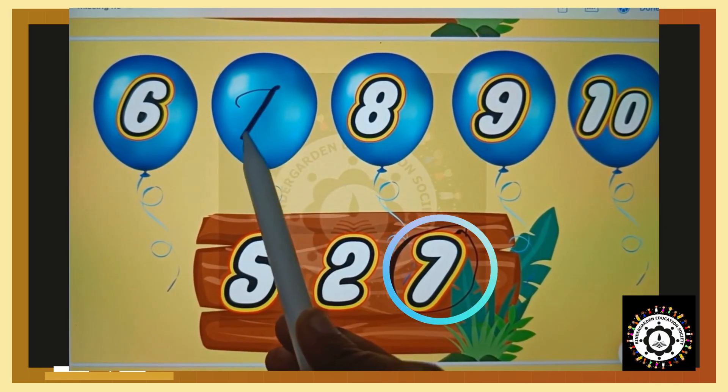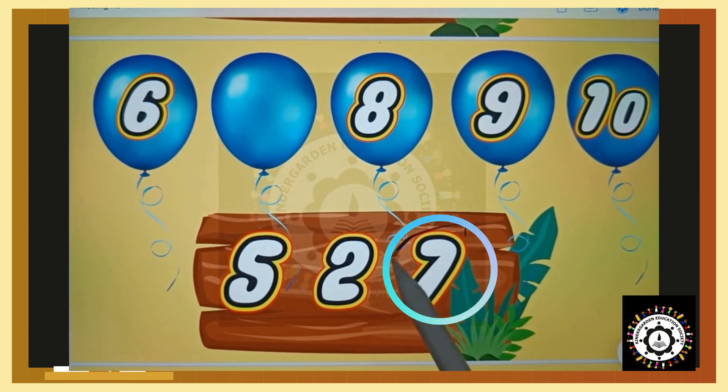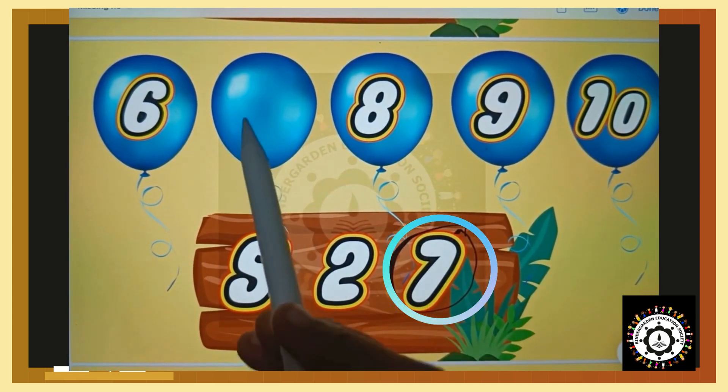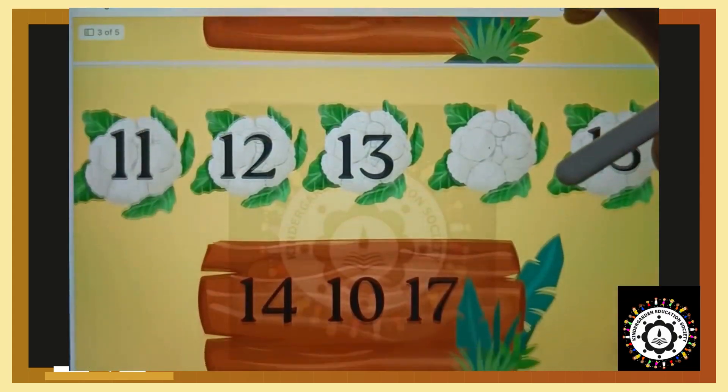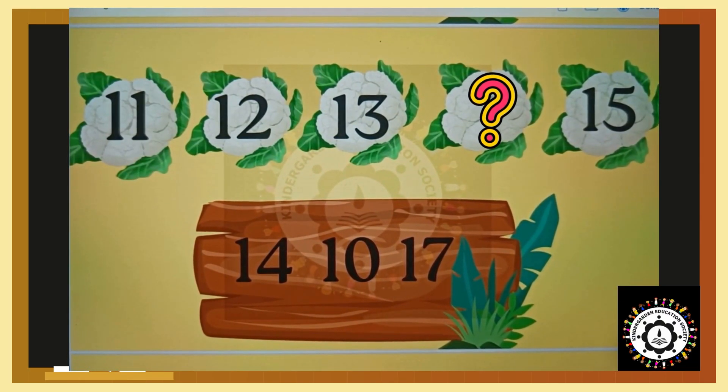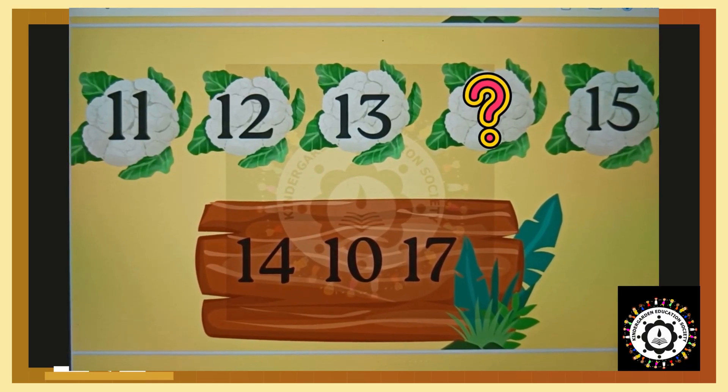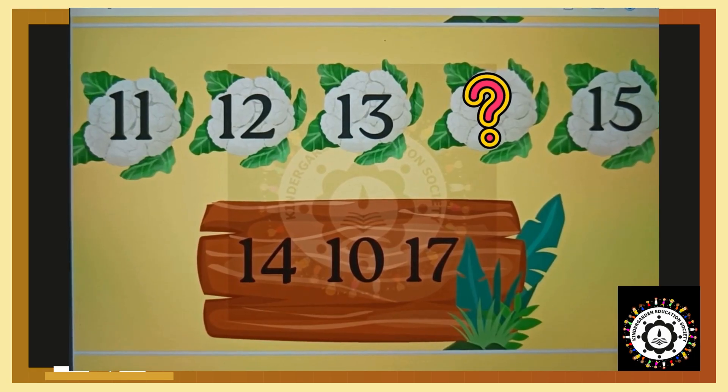Now next number: eleven, twelve, thirteen, missing number, fifteen. What comes after thirteen and before fifteen?